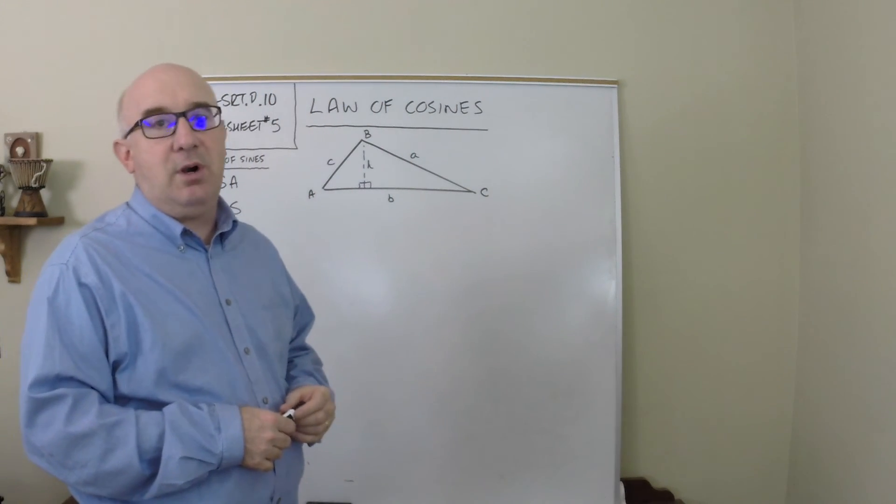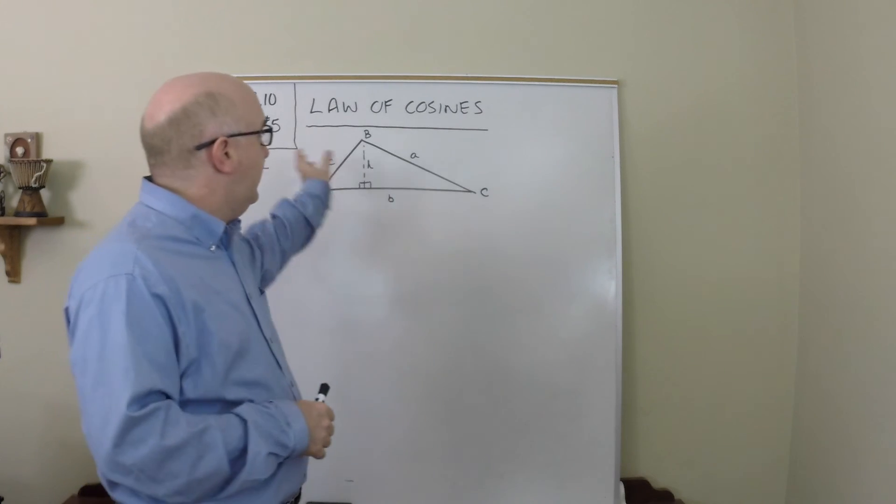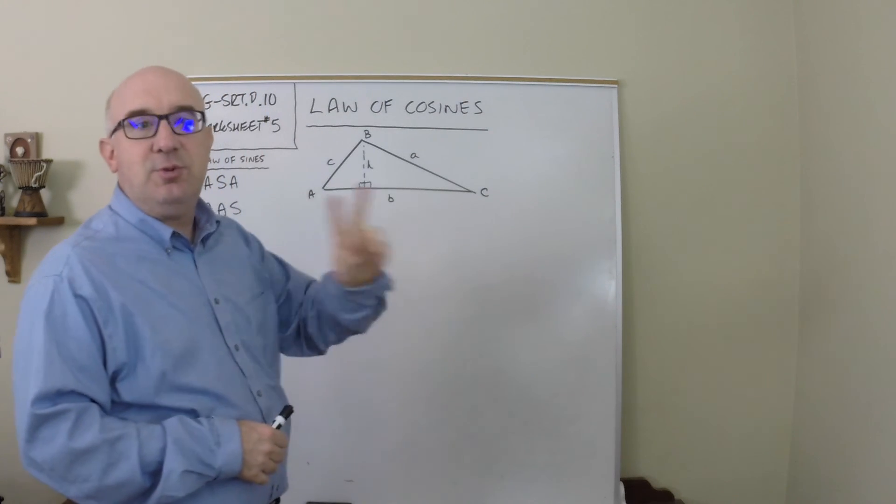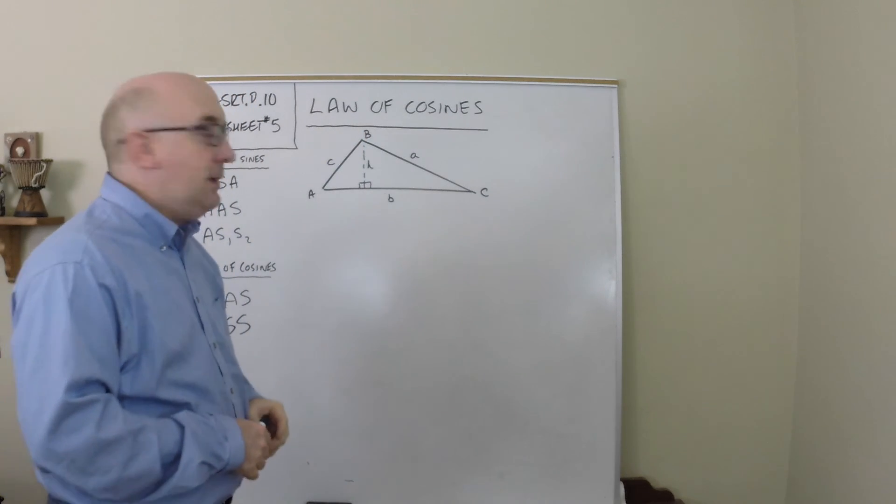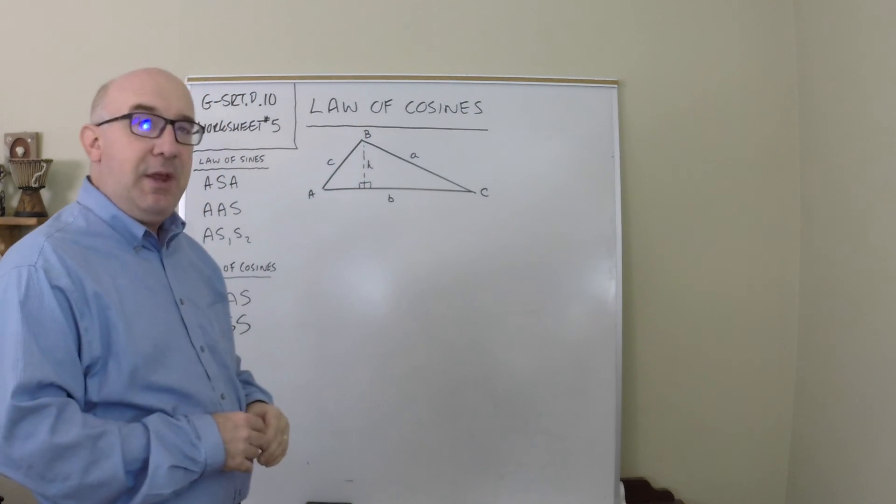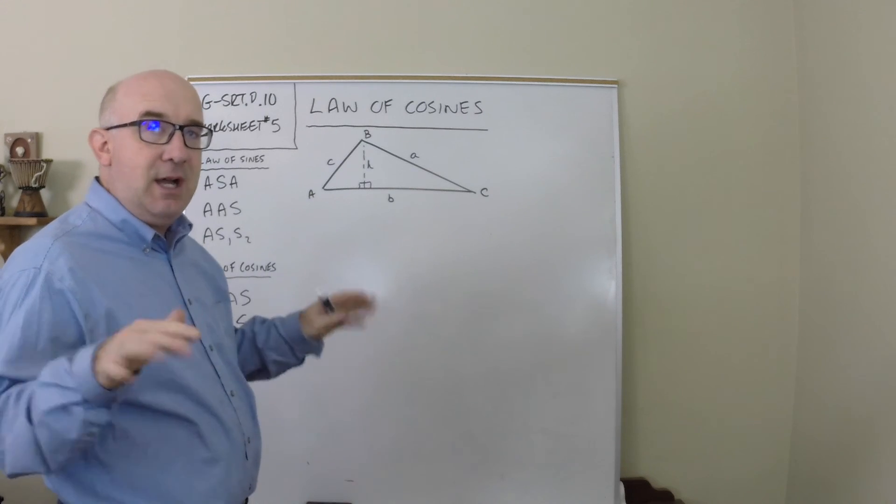and so we are going to turn the oblique triangle into two smaller right triangles by dropping in an altitude, and we're going to use the Pythagorean theorem this time to help us out.